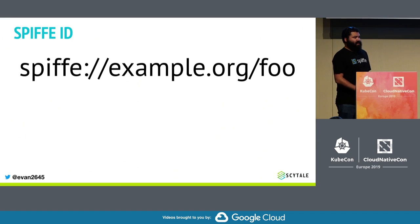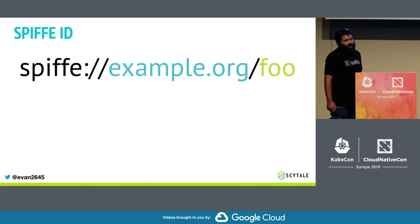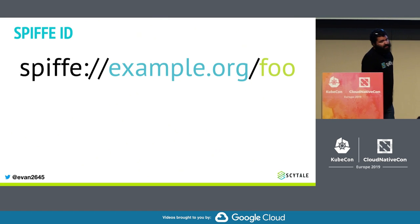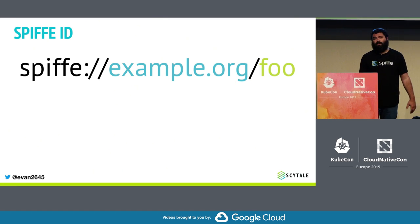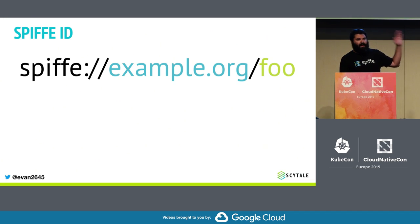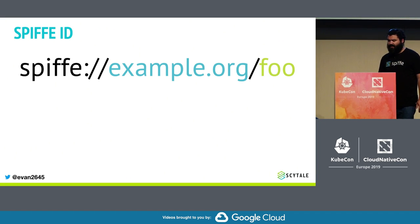The SPIFFE ID is basically just a structured string modeled as a URI. One way to think about it is like a username for workloads that is somewhat human-friendly. The specification isn't super prescriptive about what values you put in here — it doesn't have to be a DNS name. You can choose whatever values make sense for your particular deployment as long as you follow the overall structure. The middle part represents an issuing authority, or what we call a trust domain, and everything after that is the workload identity residing within that trust domain.